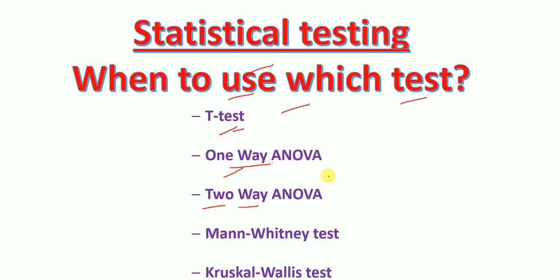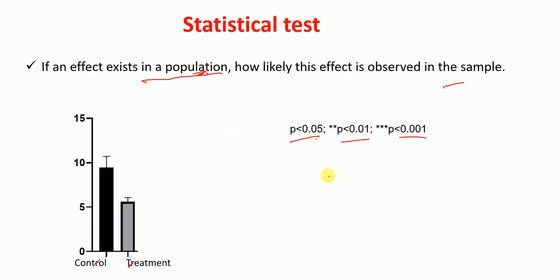I'm also going to talk about the test of normality to check if the data is normally distributed or not. So first, what does a statistical test tell us? A statistical test tells us that if an effect exists in a population, how likely this effect is to be observed in the sample. Here we have the 95% confidence interval and the 99% confidence interval, with a control and treatment group. The statistical test will tell us how likely that this effect will be observed in the sample — one example of which is the p-value.